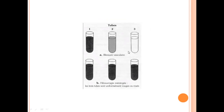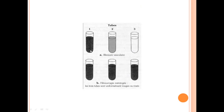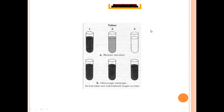Si c'est une blessure vasculaire ou effraction d'un vaisseau, on va trouver du sang dans le premier tube, un peu moins dans le deuxième, et le troisième revient clair. Mais si c'est une hémorragie méningée vraie, on va trouver du sang dans les trois tubes. Le premier tube, c'est pour l'examen direct et les antigènes solubles ; le deuxième pour la culture ; et le troisième pour l'étude biochimique, donc la glycorachie et la protéinorachie.